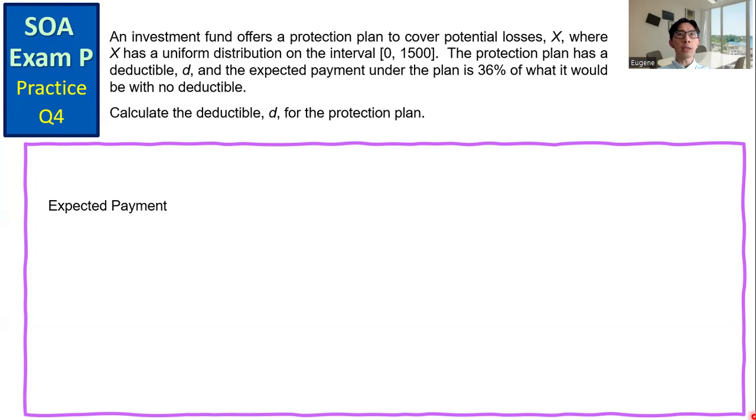The expected payment on the losses without any deductible, the loss follows a uniform distribution on the interval 0 to 1500. So if a random variable X follows a uniform distribution between A and B,